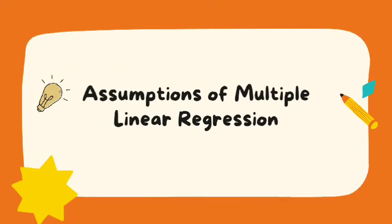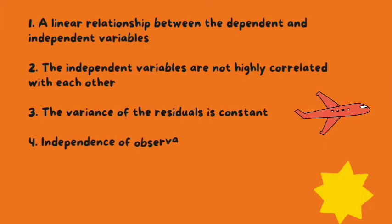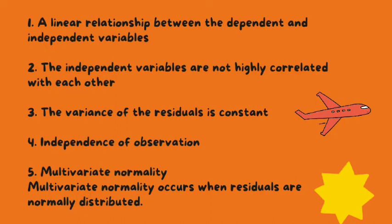Assumptions of multiple linear regression. Multiple linear regression is based on the following assumptions. One, a linear relationship between the dependent and independent variables.